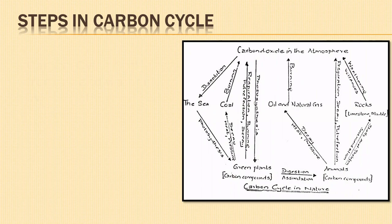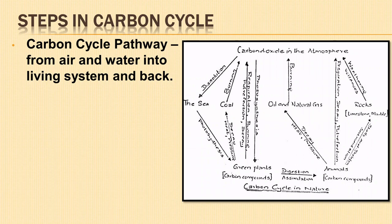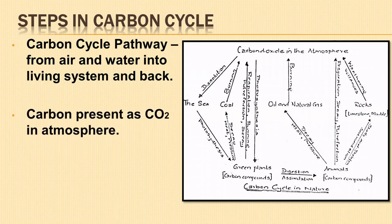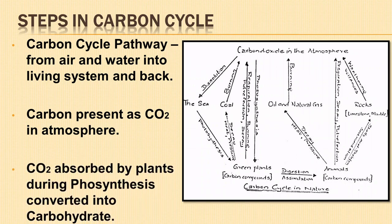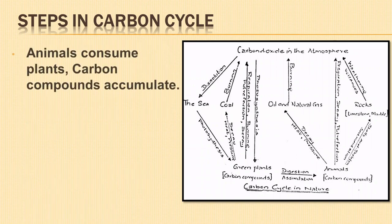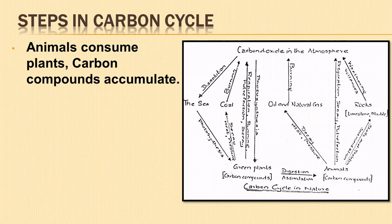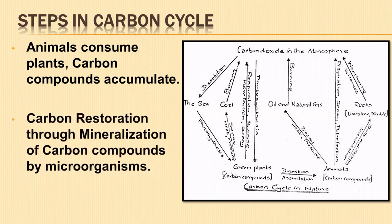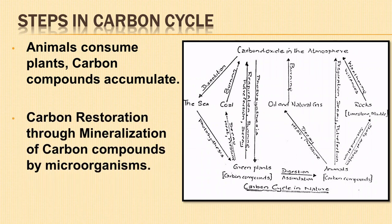Now let us study about the steps involved in the carbon cycle. The main pathway of carbon in the carbon cycle is from the air and water into the living system and back. The carbon present in the atmosphere is in oxidized form as carbon dioxide. It is absorbed by the plants during photosynthesis and is converted into reduced form — carbohydrate. These plants are then consumed by the animals, where carbon compounds get accumulated and incorporated into the tissues. When both the plants and animals die, microorganisms help to restore the original form of carbon through mineralization of the organic form of carbon.